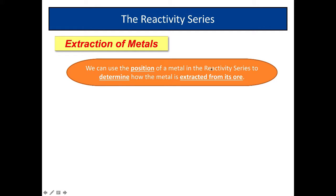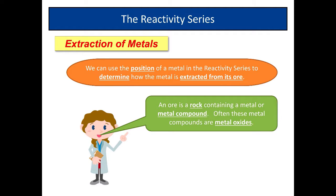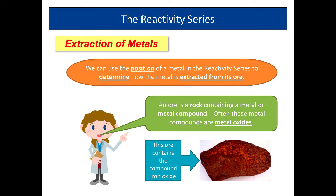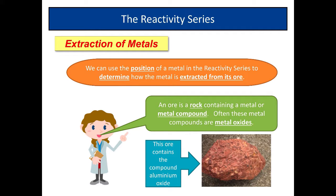We can use the position of a metal in the reactivity series to determine how the metal is extracted from its ore. Extracted from its ore means getting the pure metal from rock. An ore is a rock containing a metal or metal compound. Often these metal compounds are metal oxides — here we have a picture of iron oxide. Another example is aluminium oxide — this rock here contains aluminium oxide and therefore it's called an ore.